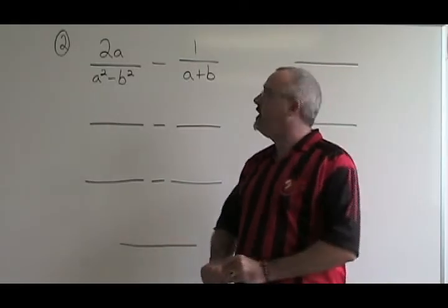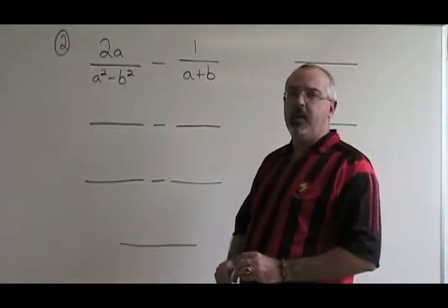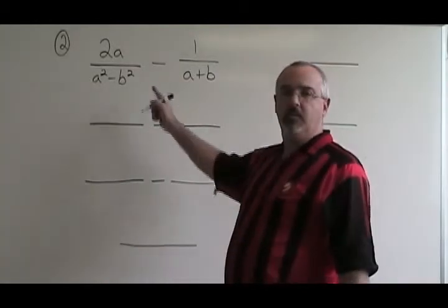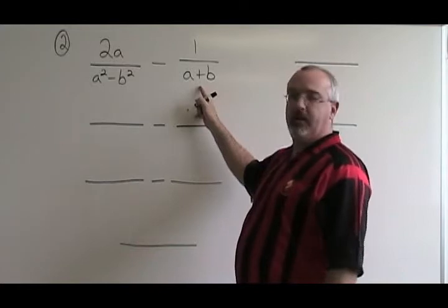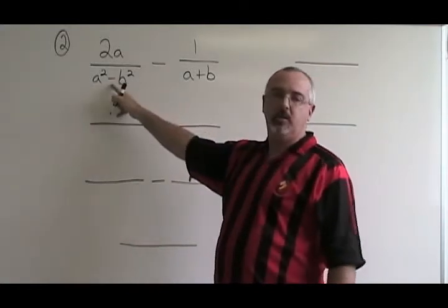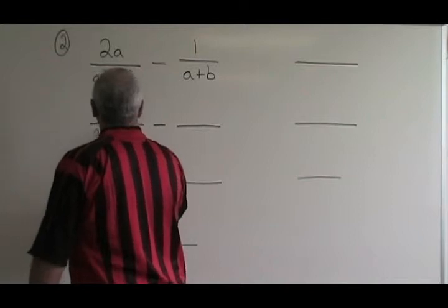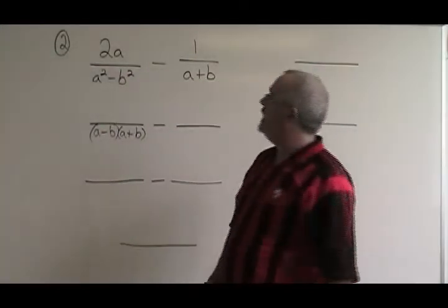In example two, we have a subtraction. It works the same way as an addition, with one slight little difference, which I will show you. The first thing we do is we factor. None of these three are factorable, but a squared minus b squared is the difference of squares. It gives us a minus b, a plus b.